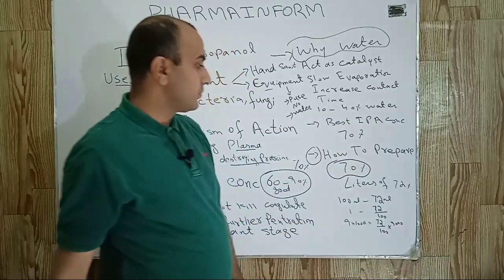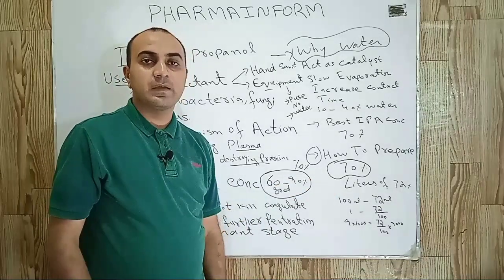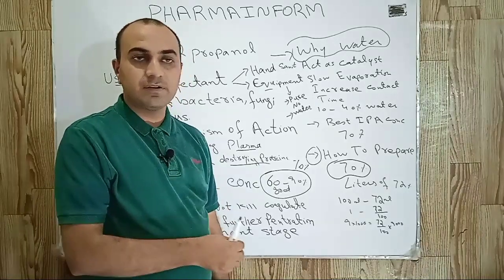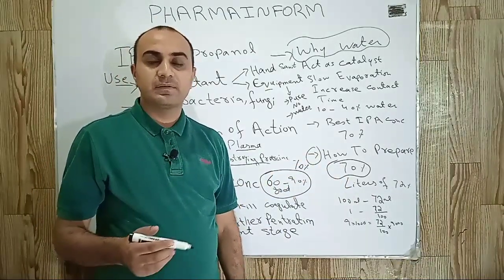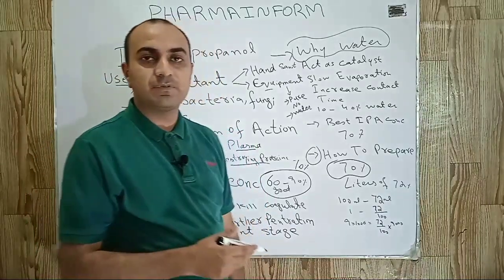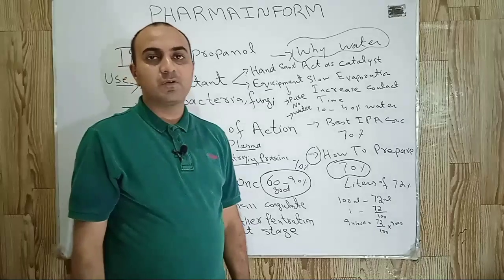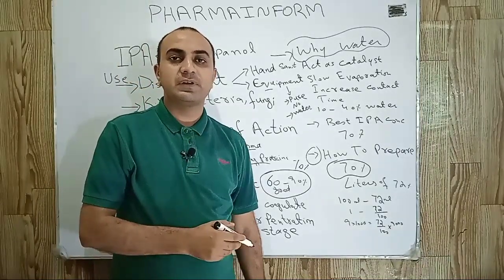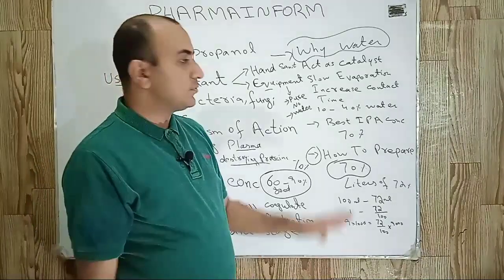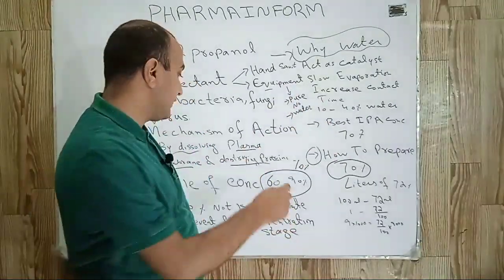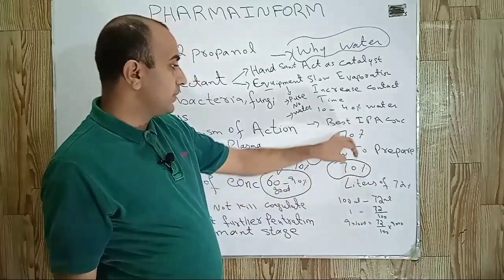Now we will discuss how to prepare a 70% IPA solution. One important thing physically observed during disinfection in pharmaceutical industries: most people do not use water along with IPA, using pure isopropyl alcohol with the concept that pure IPA will kill microbes more effectively. But as discussed previously, this practice is wrong. We should use isopropyl alcohol within the 60–90% range, and it is best to use 70% IPA solution as it is the optimum concentration.